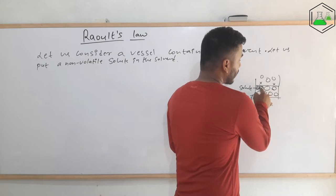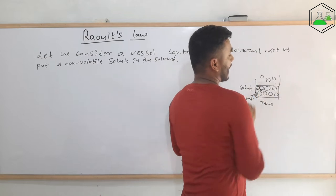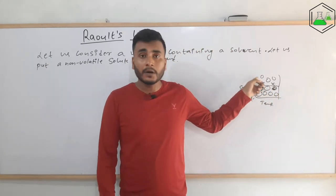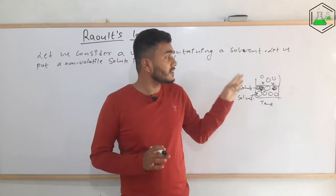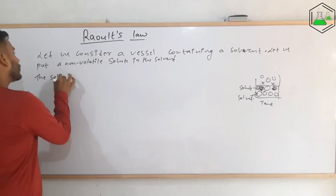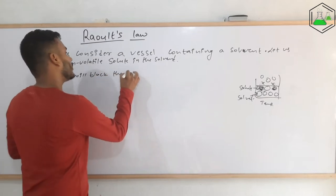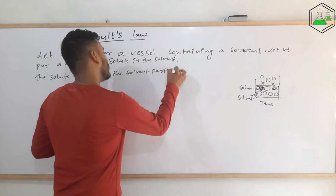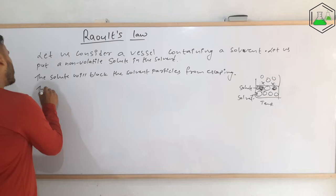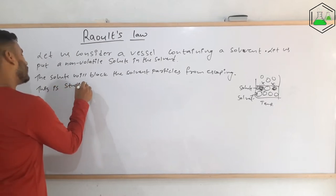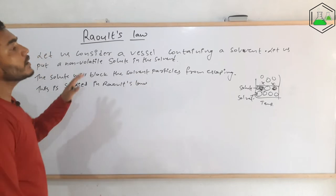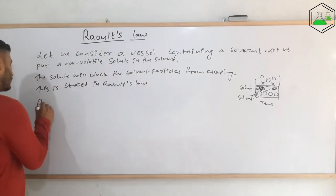What we understand from here is that whenever a non-volatile solute is added, the vapor pressure decreases. Initially, if there were no black circles, the white circles could escape from this region as well. But because of the solute blocking them, the number of particles in the vapor will be less, and as a result the vapor pressure will be lower. This is what is studied by Raoult's Law — the solute blocks the solvent particles from escaping.